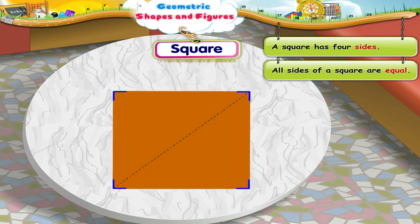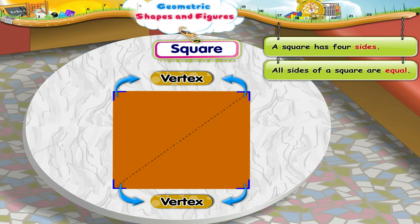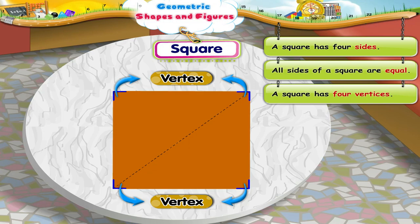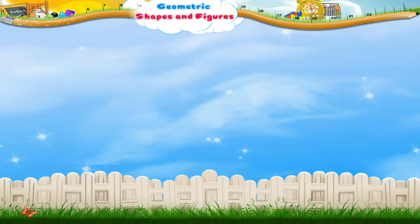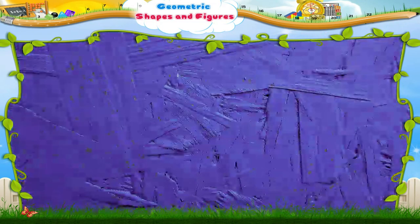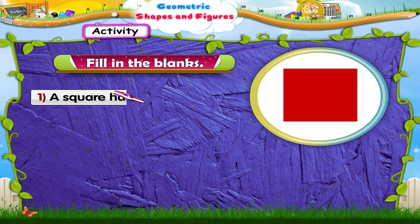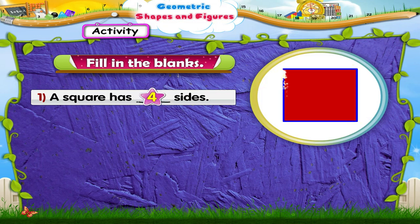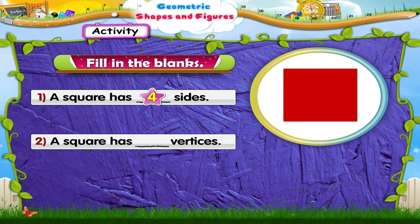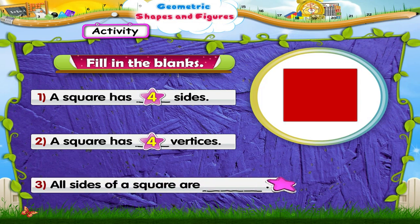This shows us that all sides of a square are equal. Now, look at the corners of this square. It has four corners. Each corner is called a vertex. So, a square has four vertices. Let us do an activity. Fill in the blanks. A square has four sides. A square has four vertices. All sides of a square are equal.